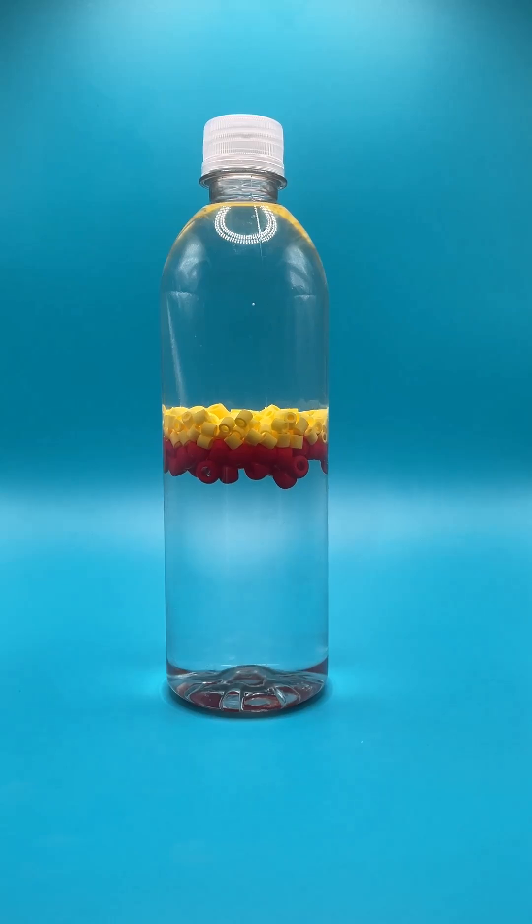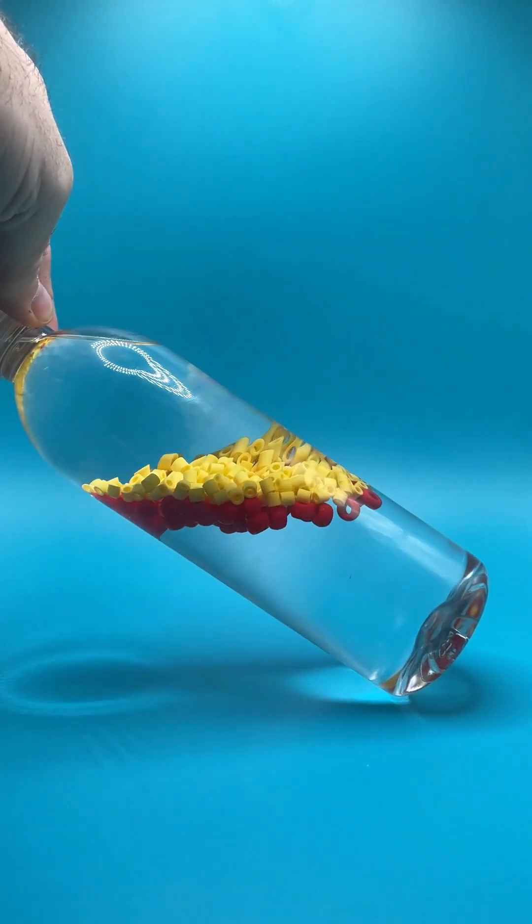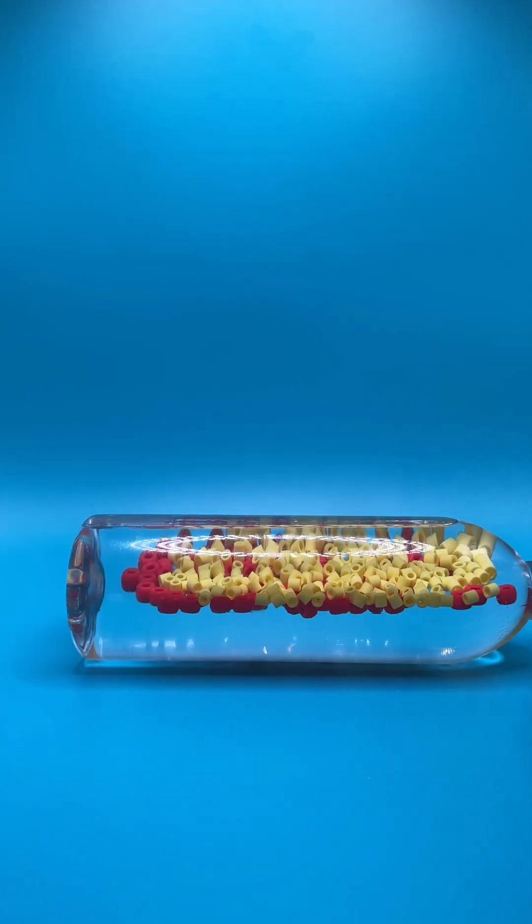The first unique feature of the density bottle is that the beads are in the middle of the bottle. They don't sink to the bottom and they don't float to the top.